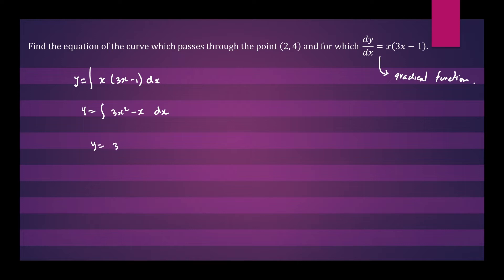y would be equal to 3x to the (2 plus 1) divided by (2 plus 1) minus x squared over 2 plus c. So that will reduce to y equals x cubed minus one-half x squared plus c.